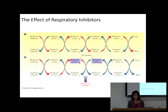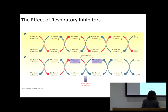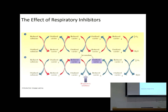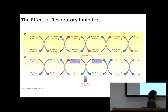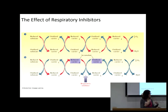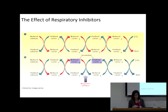Reduced carrier 2 is reacting with oxidized carrier 3 to produce oxidized carrier 2 and reduced carrier 3. If I stop this reaction from happening, the reaction can't go forward. What happens is the reactions proceed up until that block, but it's like damming up a waterfall — the water behind the dam starts to accumulate. So if those two carriers accumulate, we know that carrier 2 reacts with carrier 3.